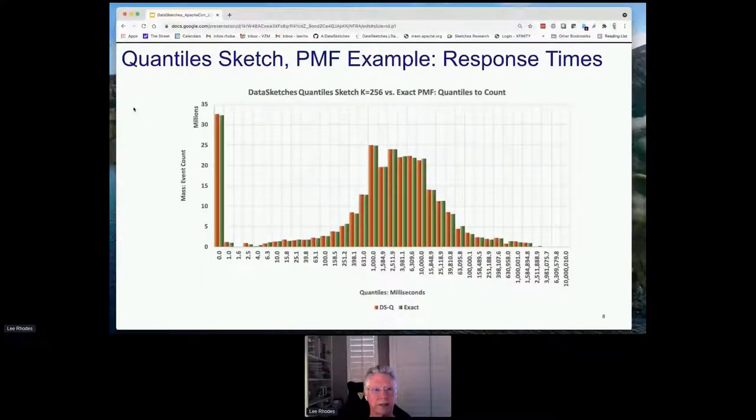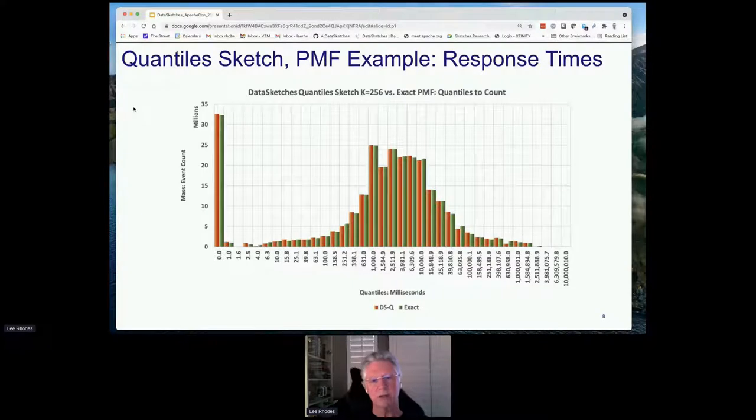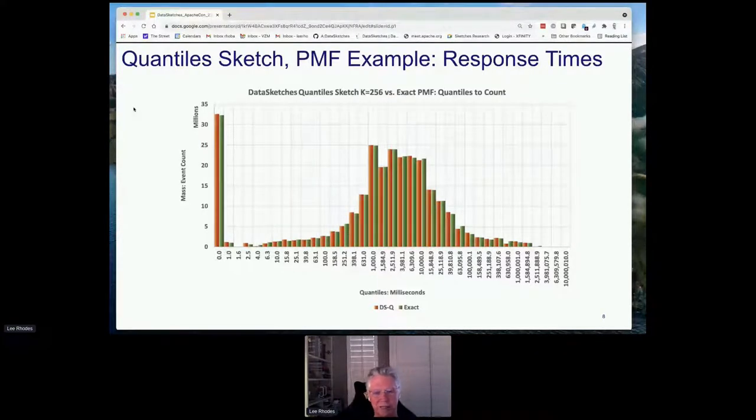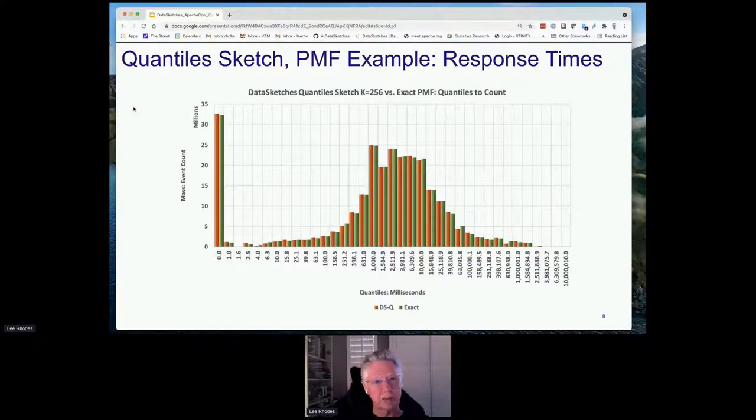Our most recent sketch is called the REQ or relative error quantile sketch, also developed by members of our team, also implemented in Java, C++ and Python. To give you some idea of what you can do with a quantile sketch, you can actually see the distribution of your data as a density plot. This is a probability mass function here. It gives you a contour over the entire distribution of the variable, and these happen to be numeric variables. Note that the x-axis is logarithmic. This curve is very close to a Poisson kind of distribution.